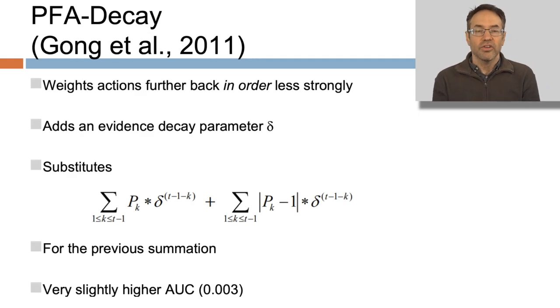An early major extension to PFA was PFA decay by Yua Gong and her colleagues. PFA decay weights actions further back in order less strongly, and it adds an evidence decay parameter, sigma, substituting an equation that uses that evidence decay for the previous summation. Is it any better? Not really. Historically important, people don't use it today.